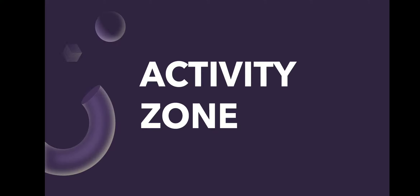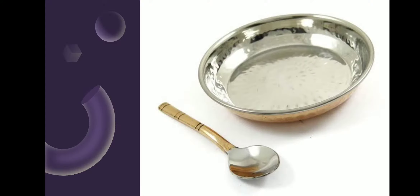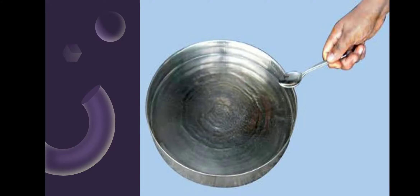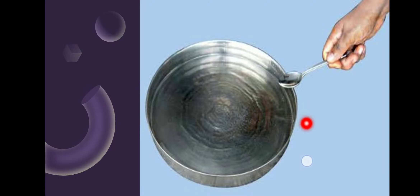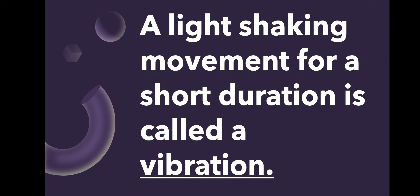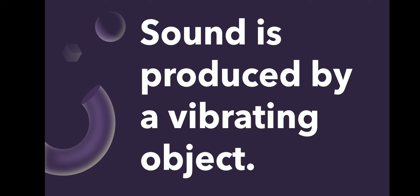Now we are going to do an activity. We will take a steel plate and a steel spoon, and strike the plate with the spoon. We will observe that a sound is produced. When you touch the plate, you will feel a light shaking movement for a short duration — this is called a vibration. This experiment confirms that sound is produced by vibrating objects.